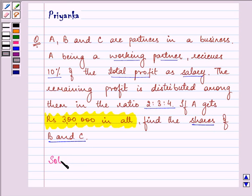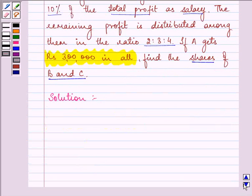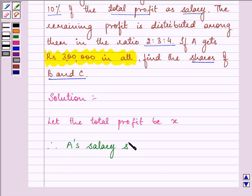In this question, we need to find out firstly the total profit of this firm. Let the total profit be X. Now, out of this X profit, first of all we need to give 10% of the total profit as salary to A. Therefore, A's salary share will be 10% of total profit, that is 1 upon 10X.